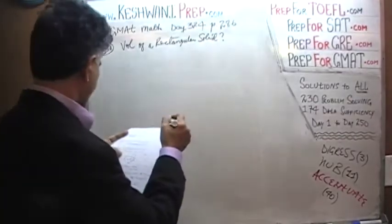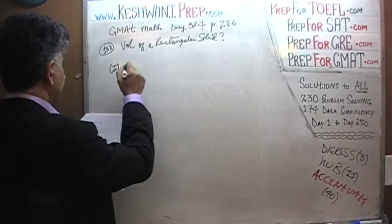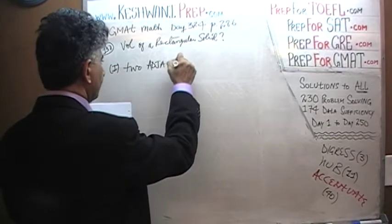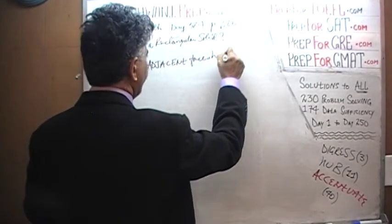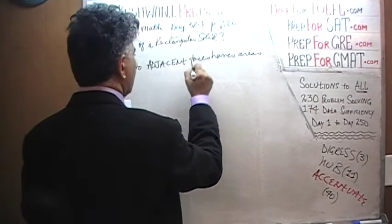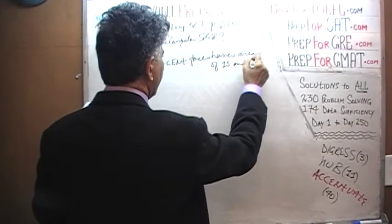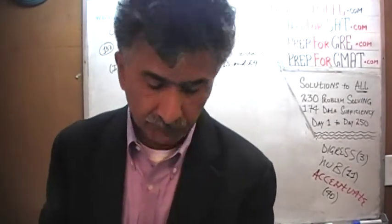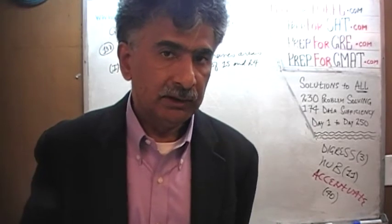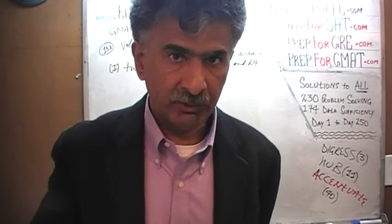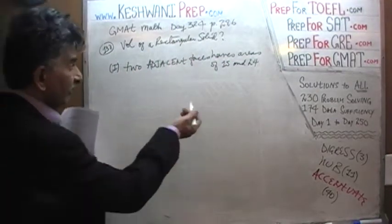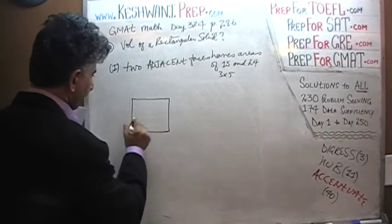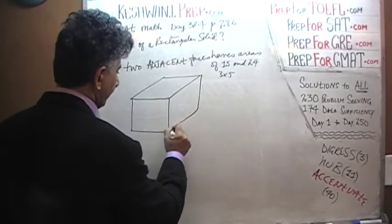Let's see what they tell us. In the first statement they tell us that the two adjacent faces have areas of 15 and 24. Let's see if that is enough for us to figure out the volume of this rectangular solid. Let's look at a couple of scenarios. For example, we may think of something very simple and straightforward, like when I say 15, I am thinking of 3 by 5. So let's do 3 by 5.